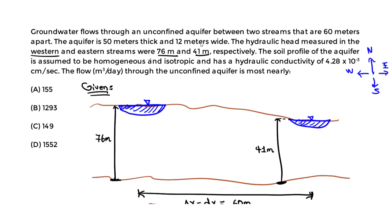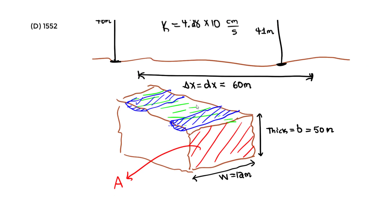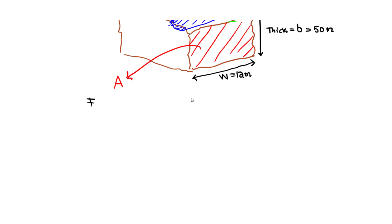The hydraulic conductivity K is given as 4.28 × 10⁻³ cm/s. We apply Darcy's Law to find Q because we are not looking at a cone of depression and we're not asked to find drawdown. So we use Darcy's Law to find Q.